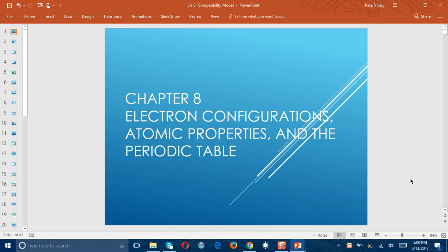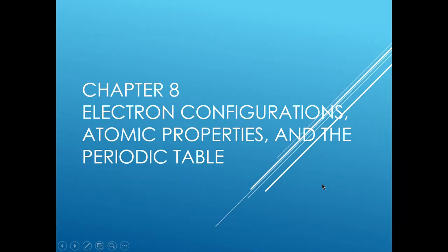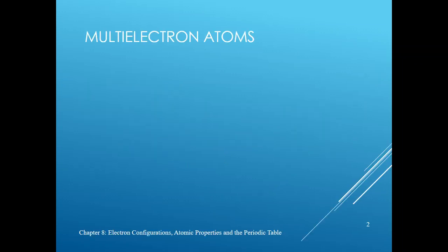Now we're going to start with Chapter 8, which covers the whole notion of electron configurations and how they're related to the properties of atoms, and also how they're related to the positions of the elements in the periodic table.